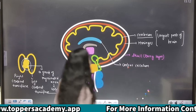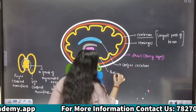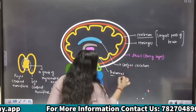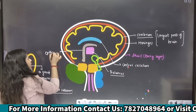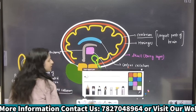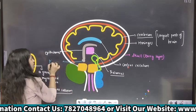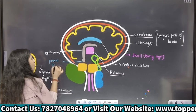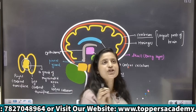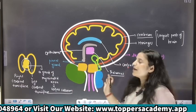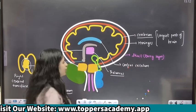Ab next dekho — diencephalon. Diencephalon mein jo beech wala part hai, this is thalamus. Jo thalamus ki roof bana raha hai, this is your epithalamus. Epithalamus ke neeche ek chota sa gland hai jise hum pineal gland bolte hain. Hum maante hain this is a vestigial of our third eye. And it secretes a very important hormone — melatonin. Melatonin ki vajah se aapki body mein biological cycle control hoti hai.